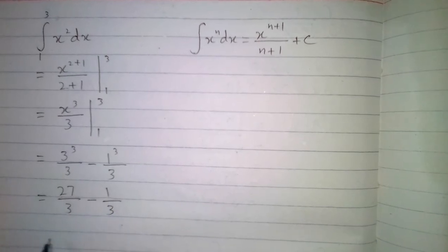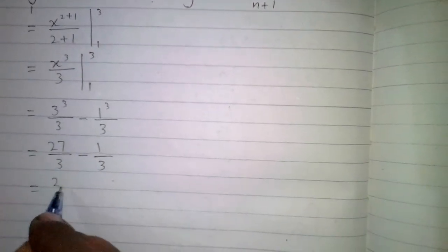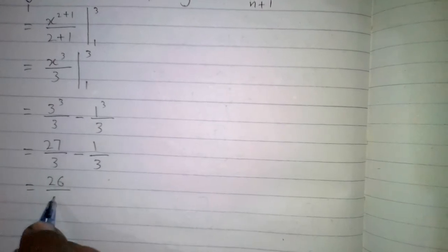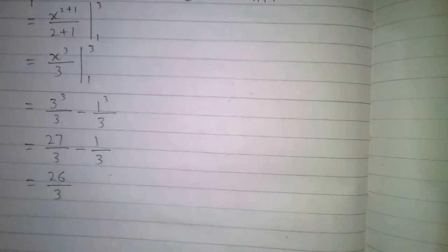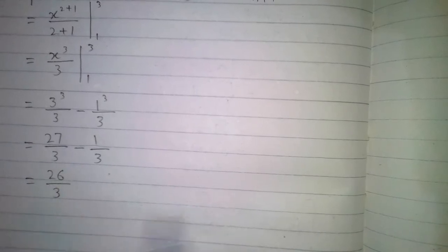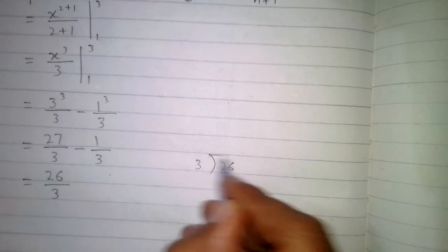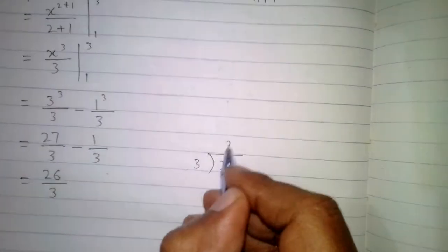And we can further simplify this fraction because this is an improper fraction, so we will divide 26 by 3. 3 eights are 24, so we have 2 as a remainder.